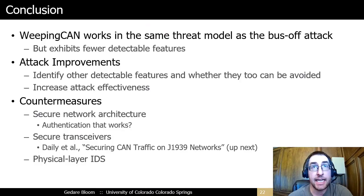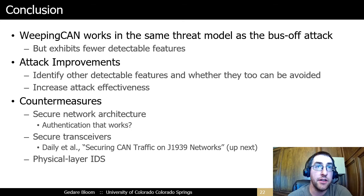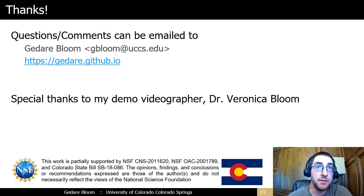To conclude, the Weeping CAN attack has similar requirements and consequences as the original bus-off attack, but exhibits fewer detectable features. Future work should consider what other detectable features may still exist and whether they can be eliminated by a clever attacker. The attack could also be tuned to improve its success rates. Countermeasures to Weeping CAN deserve exploration — we should understand to what extent secure network techniques such as authentication may prevent the attack, and new technology embedded in secure transceivers may prevent it from succeeding. Physical layer intrusion detection systems might still be able to detect Weeping CAN, although their ability to single out simultaneously transmitting ECUs has not been demonstrated. Thank you for watching. This work was supported by the NSF and the state of Colorado.